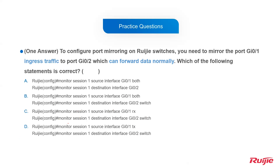Let's see a practice question. To configure port mirroring on a switch, you need to mirror the port G0/1 ingress traffic only — pay attention, only the ingress traffic should be mirrored — and the destination port is G0/2, with the port able to forward data normally. Which of the following statements is correct? Option A: monitor session 1 source interface G0/1 both — this is incorrect, as 'both' captures ingress and egress. Option B is also incorrect. Option C uses 'rx' which means receive, indicating ingress traffic — this is correct. Option D uses 'tx' which means transmit. Therefore, the correct answer is C.